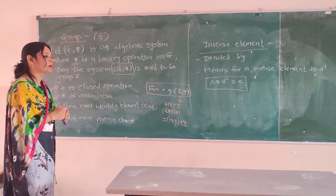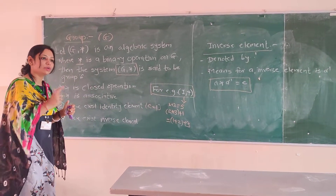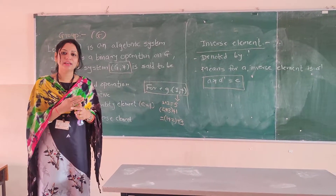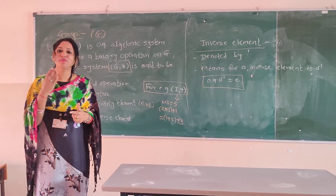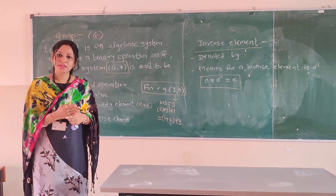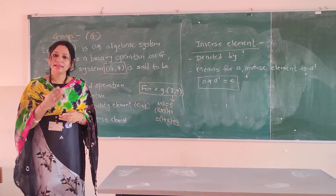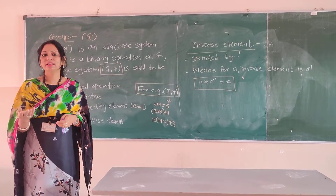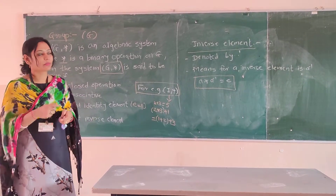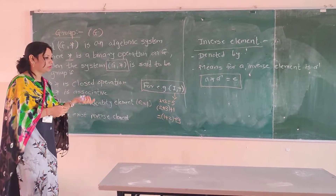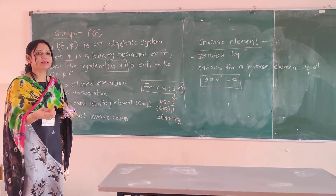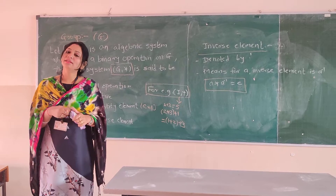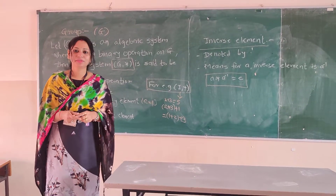This is all about group, where a system must satisfy the properties of closed operation, associativity, identity element, and inverse element — then it is called a group. In our next section we will see the types of group and subgroup. Thank you.